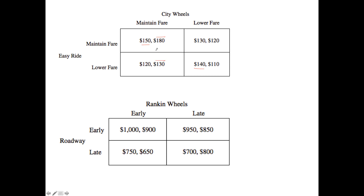What is the dominant strategy here? Easy Ride does not have a dominant strategy because their action depends on City Wheels' action. However, City Wheels will always choose to maintain their fares — that is a dominant strategy. The top-left corner is the Nash Equilibrium, meaning these players have no incentive to deviate when they reach this outcome.